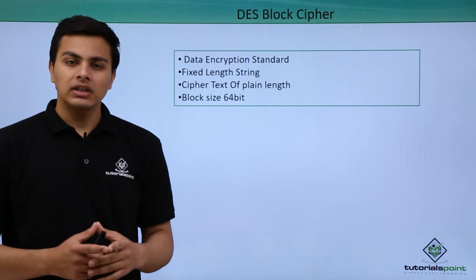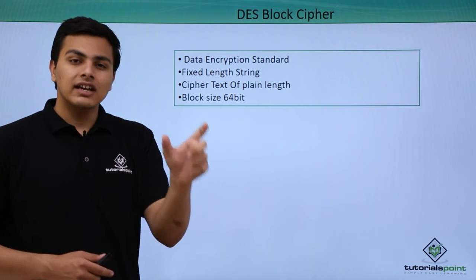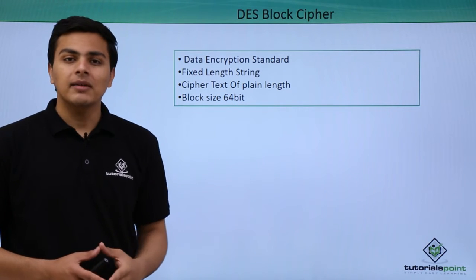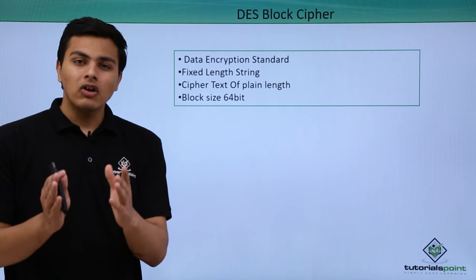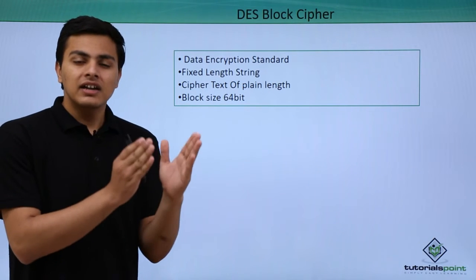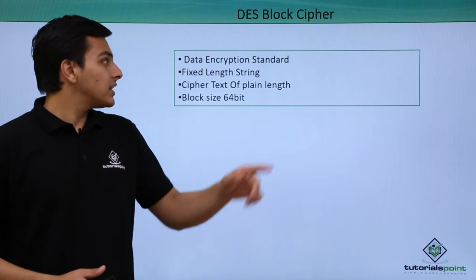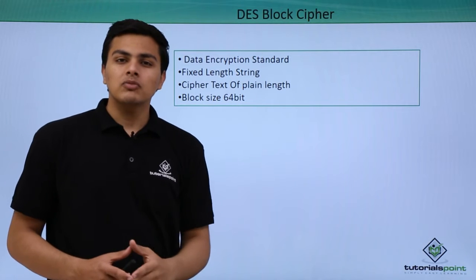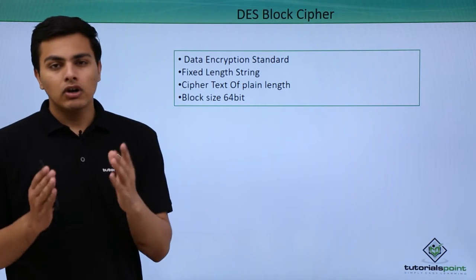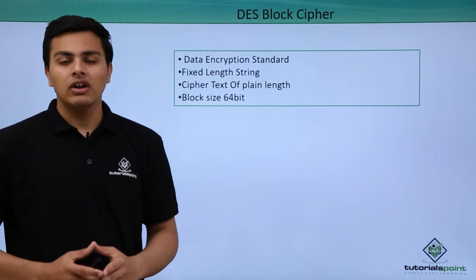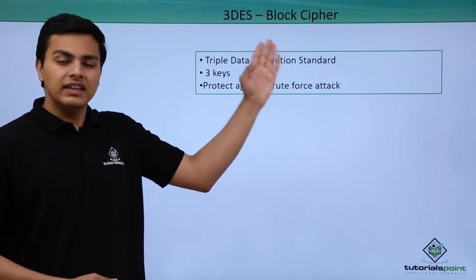One more thing to note is that in block ciphers the key size and the data block size converted at one time are the same. So since DES encrypts a block size of 64 bits, its key should also be 64 bits. However, DES is vulnerable to brute force attacks and dictionary attacks, so it is not considered secure. To address this, information security researchers developed 3DES.